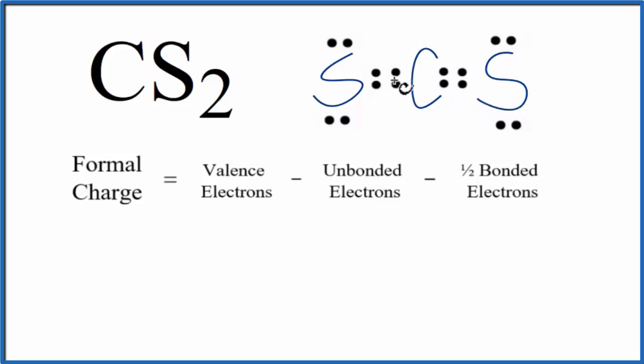So in this case, you could have a double bond here and here, or you could do a triple bond and a single bond. So which Lewis structure is more favorable or likely? And that's what the formal charges tell us.